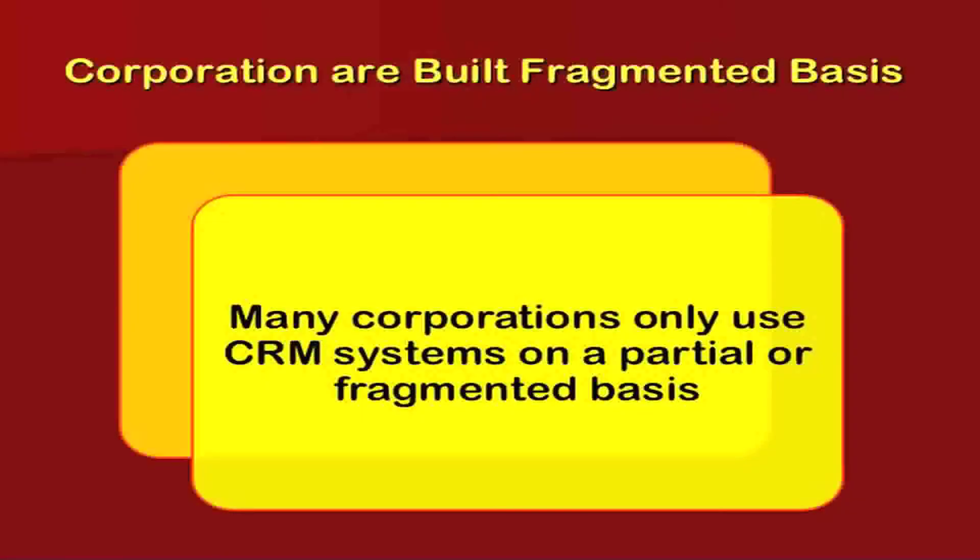Corporations are built on a fragmented basis. Many corporations only use CRM systems on a partial or fragmented basis. Companies have data but are not using the total data input to frame their strategic framework, because they do not have the resources to reach and meet the needs of every customer. Even companies like Amazon are not able to give customized solutions to every problem.